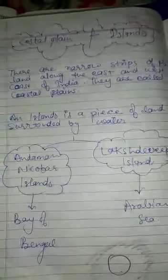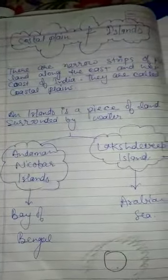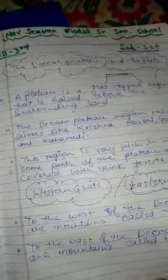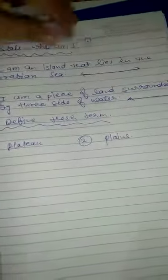So today we discussed the Deccan Plateau, the Western Ghats, the Eastern Ghats, coastal plains, and islands. Now it's time for your homework. First, state questions: Who am I? I am an island that lies in the Arabian Sea. Second, I am a piece of land surrounded by three sides of water. Question number two: define these terms — first, plateau; second, plains. That's all about today's video. Thank you so much.